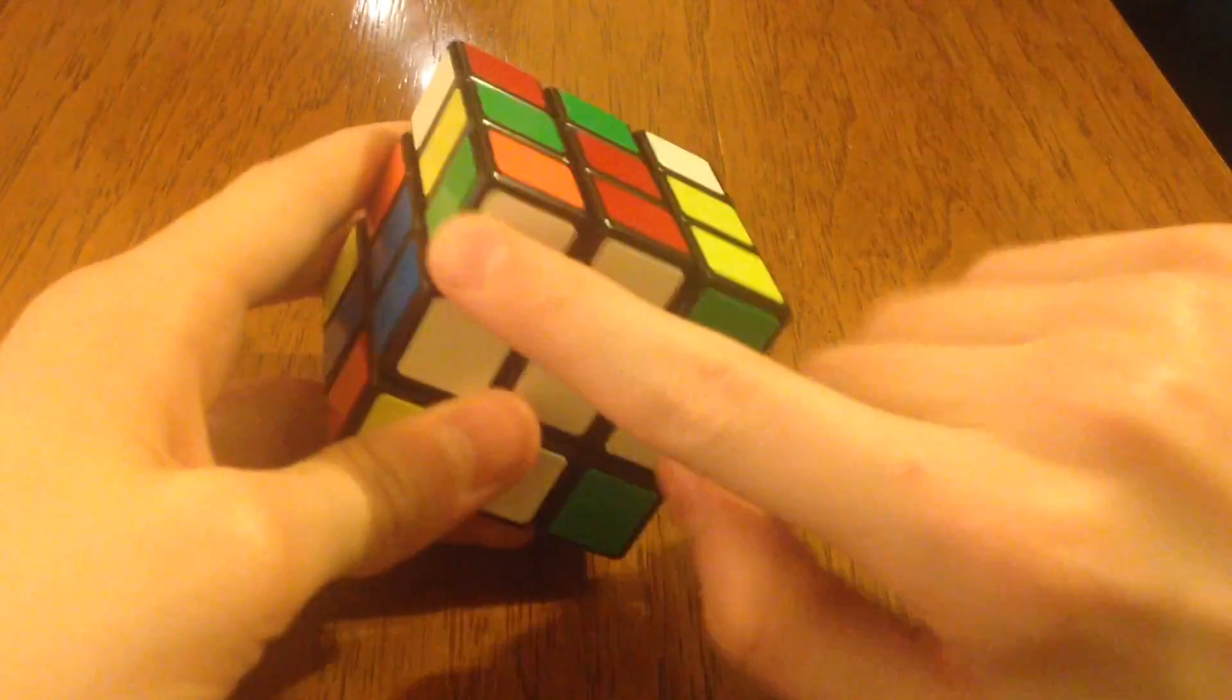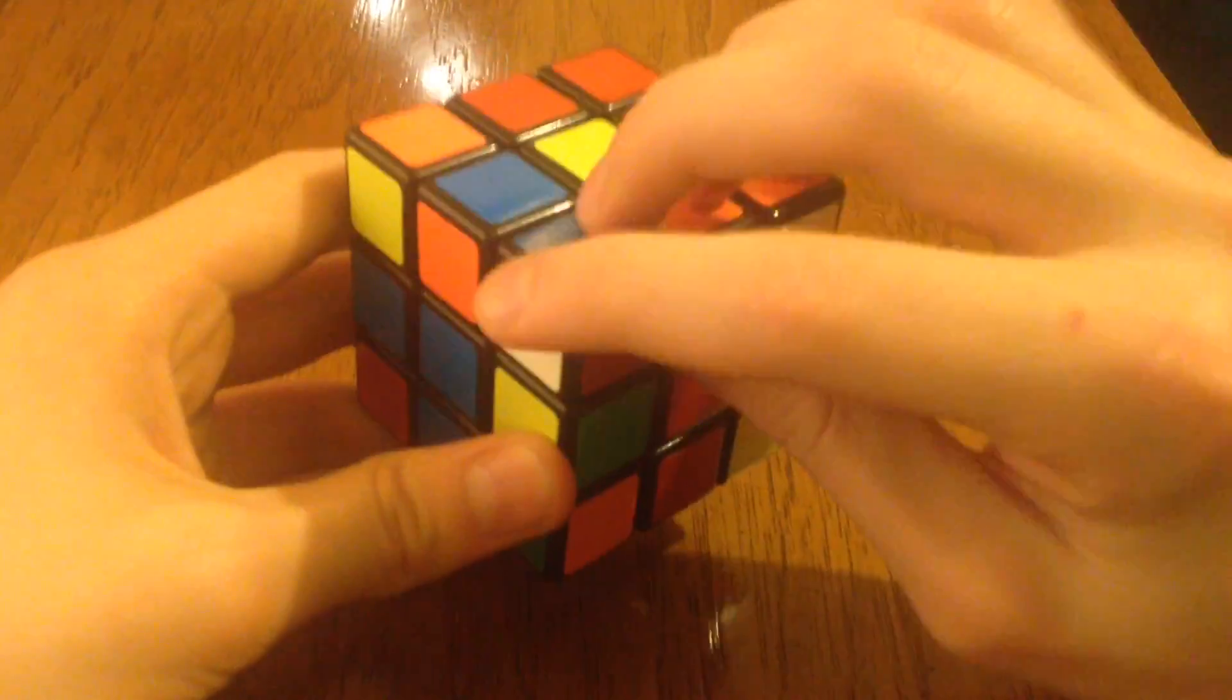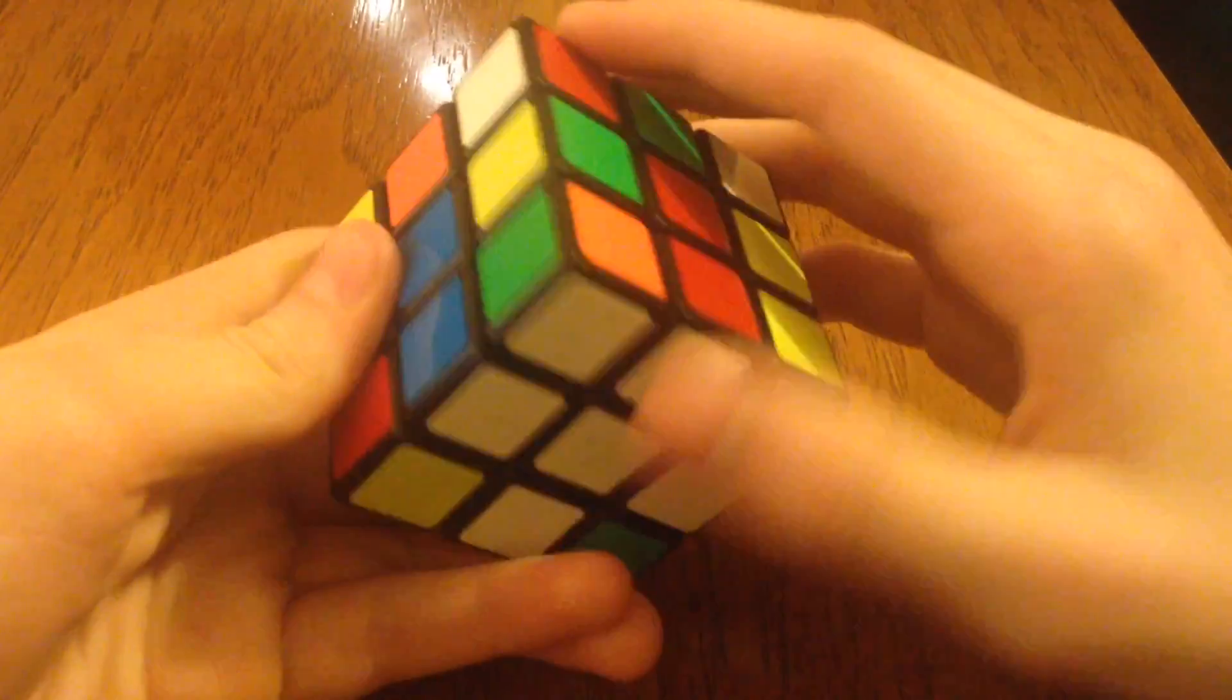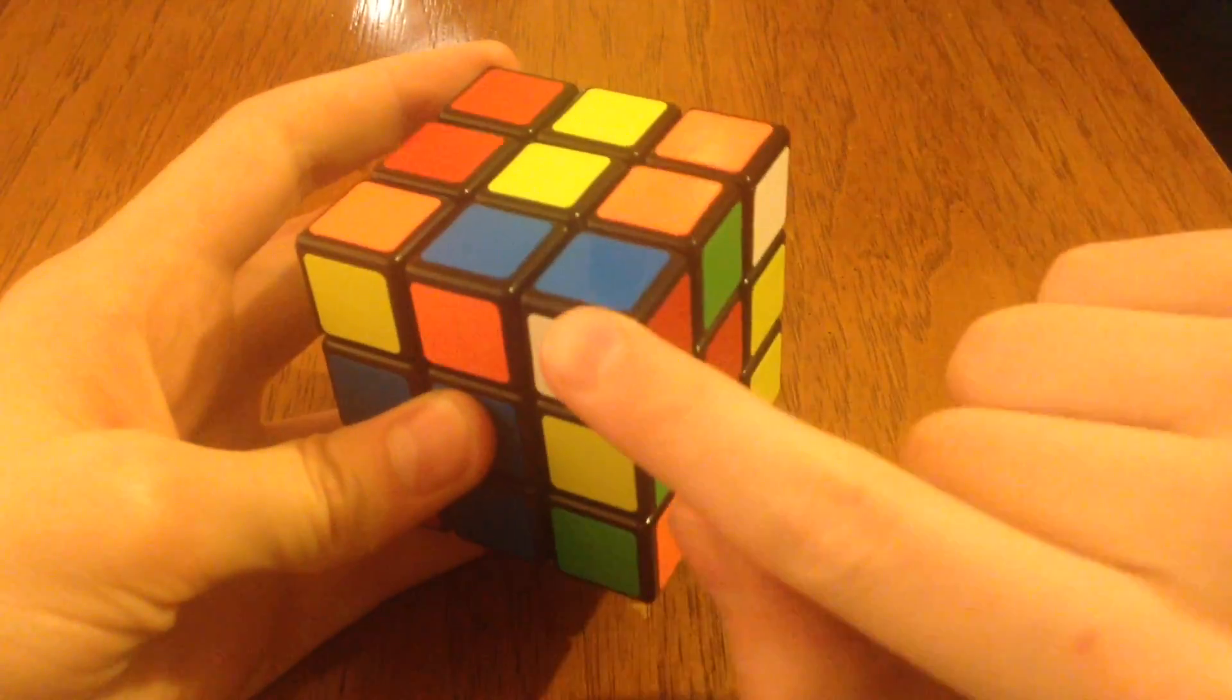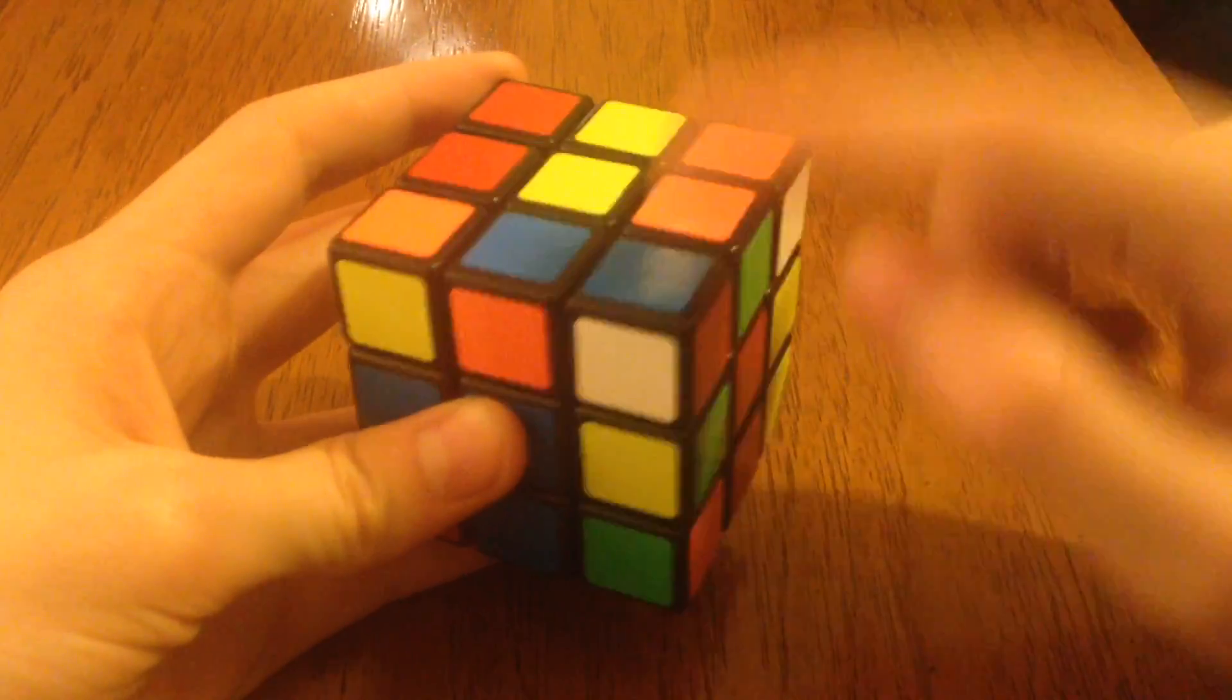Basically, this is the simplest algorithm ever. But you want a corner to be in the correct spot, and here we already have it. You look at the sides. We have white, red, and blue. That's this corner right here. Right here, we have white, red, and blue. So we're going to position it directly above the corner we want.